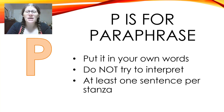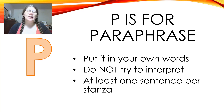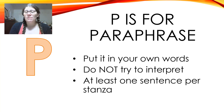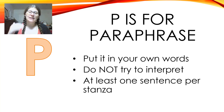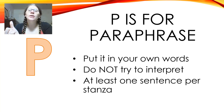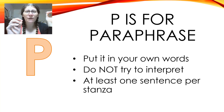Step two of TPCAST is P, which is for paraphrase. When you paraphrase something, all that means is putting it into your own words. But there's a difference between paraphrasing and summarizing. When you summarize something you shorten it down — you condense it. So if you summarize, you might read four paragraphs and write one paragraph to tell the main idea. When you paraphrase a poem, you do it line by line, and the lines are not necessarily a full thought.